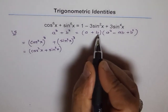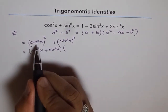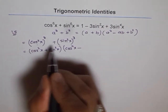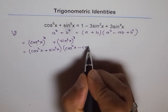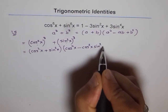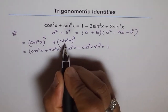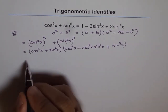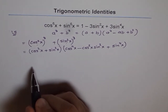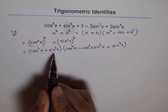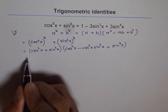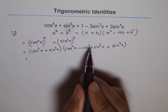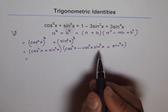That is a plus b. Then I have a square, which is square of cos square x, which is cos to the power of 4x. Minus this times this, which is cos square x times sin square x. Plus b square, that is sin to the power of 4x. Now, cos square x plus sin square x equals 1 — that is the Pythagorean identity. Therefore it reduces, giving: cos to the power of 4x minus cos square x sin square x plus sin to the power of 4x.